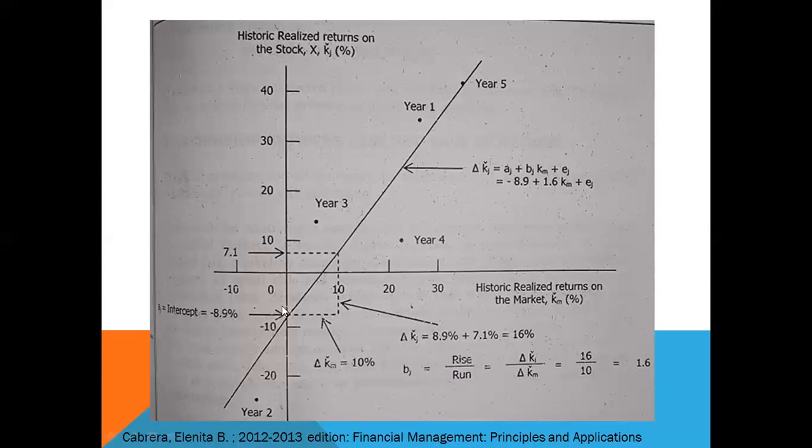The regression line equation enables us to predict a rate of return for a stock k sub j given a value of market. For example, if the market equals 15 percent, we would predict that the stock equals negative 8.9 percent plus 1.6 (the beta) multiplied by 15 percent, so that equals 15.1 percent.